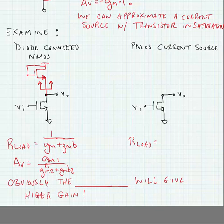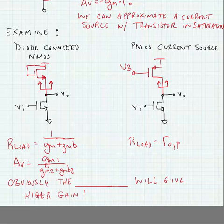We could instead look at a PMOS current source. This just has some V bias driving its gate. And if we look at this load resistance that this is providing, this would be the output resistance of the PMOS transistor.